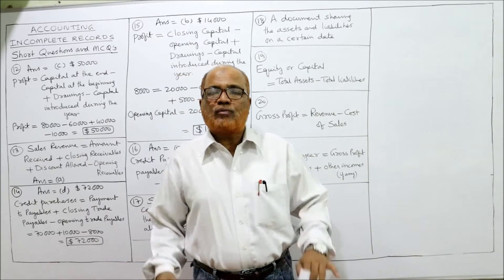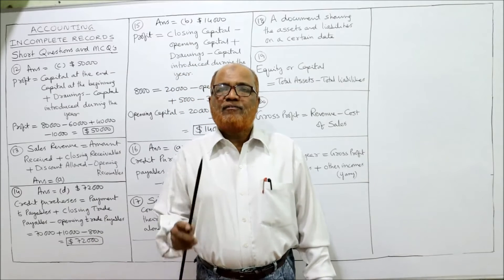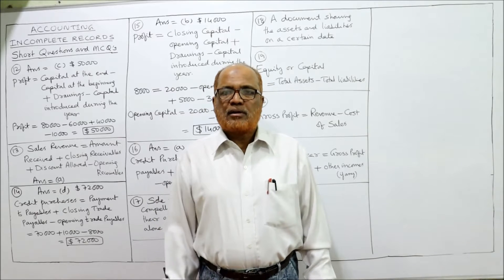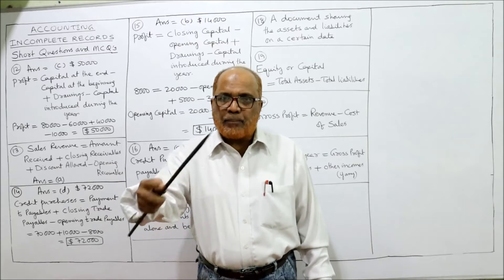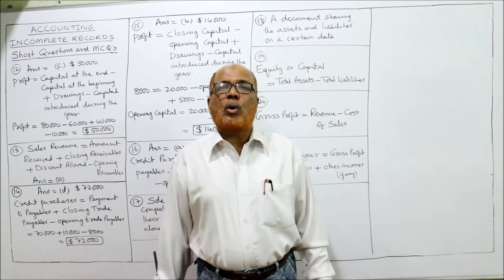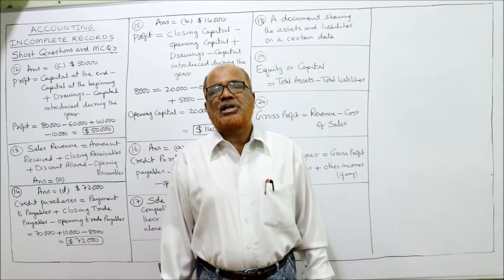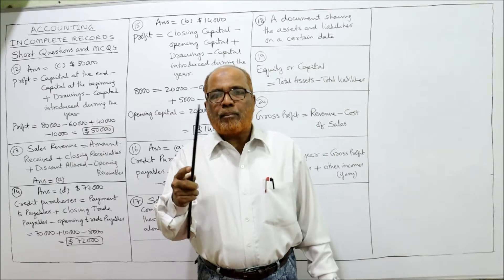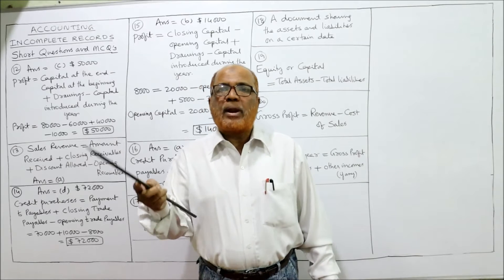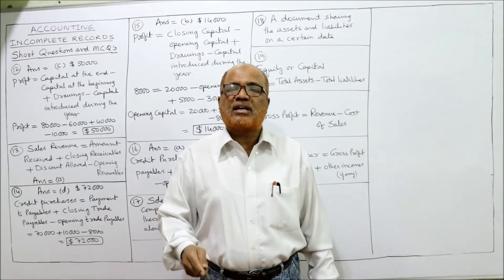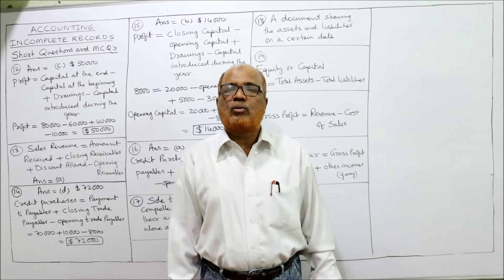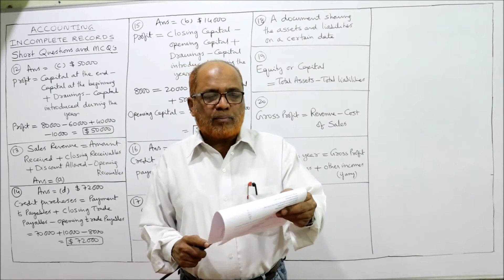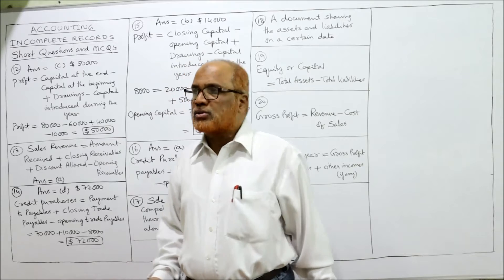In the theory video I explained how to find profit using a statement form. First take the closing capital, add drawings, then deduct further capital introduced during the year, then deduct the opening capital — the resulting figure is profit. In other words: closing capital minus opening capital plus drawings minus further capital introduced gives you the profit earned. Here, the answer for problem 12 is C: $50,000.